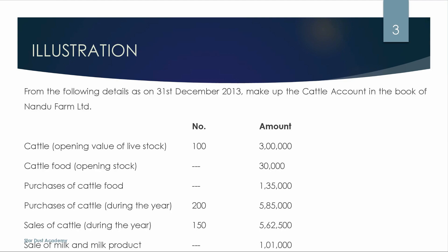The value is $30,000. The purchase of cattle food is $1,35,000. We have the opening and closing cattle food figures. The closing of cattle food is $2,50,000, giving a total of $5,85,000.